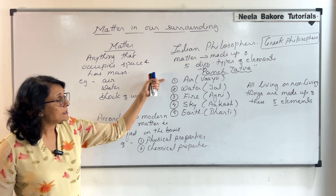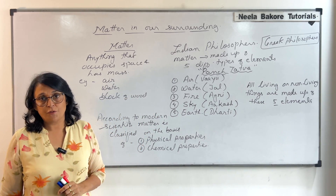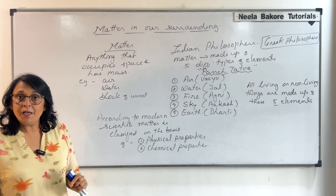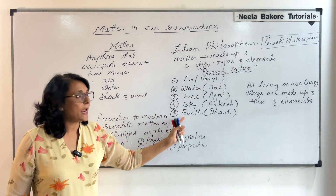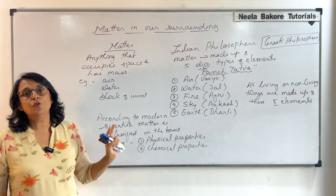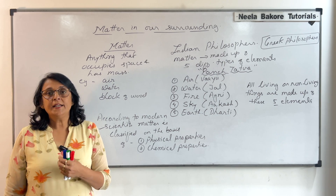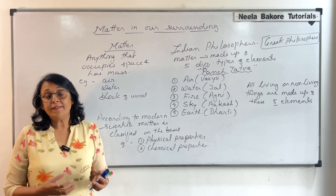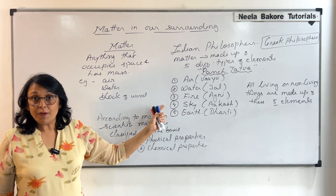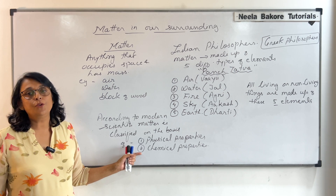One thing we must understand is that this ancient description of matter given by Indian philosophers matches with descriptions given by many other scientists and philosophers. All of them believe that everything — living or non-living — is made up of the same five elements. Confirming our definition: matter is anything that occupies space and has mass. We can perform very simple experiments to understand this. Whatever we see around ourselves is matter, because it occupies some space and has some mass. This is how modern scientists classify matter — on the basis of physical and chemical properties.